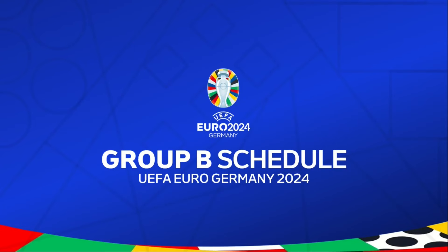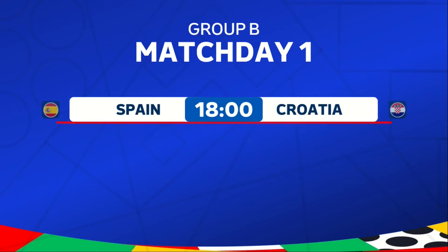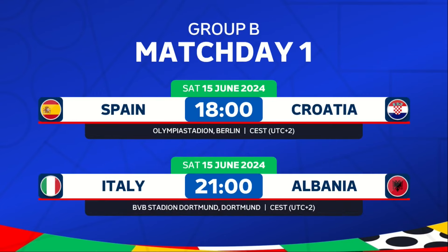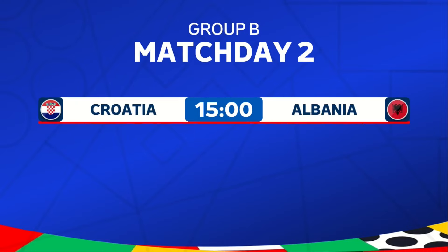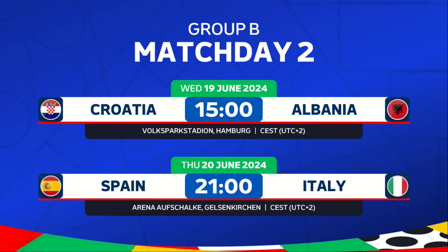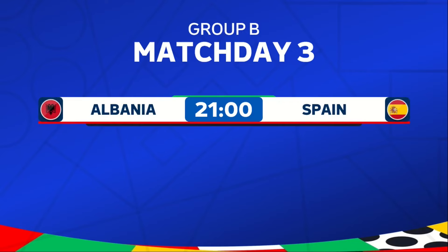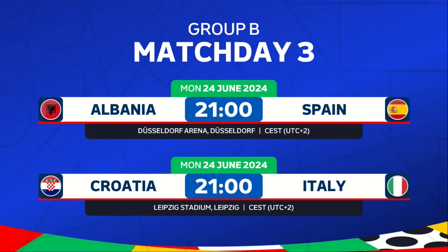Group B Schedule. Match Day 1: Spain versus Croatia and Italy against Albania. Match Day 2: Croatia versus Albania and Spain against Italy. Match Day 3: Albania versus Spain and Croatia against Italy.